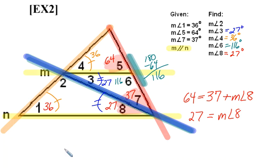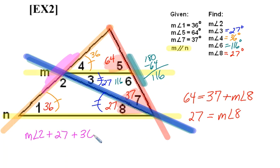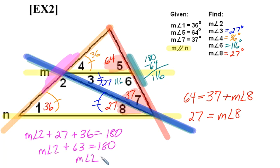Be careful: alternate interior angles are only congruent when they are formed by parallel lines. At this point, angles 2, 3, and 4 glued together form a line. So to determine the measure of angle 2, we say the measure of angle 2 plus 27 plus 36 equals 180 degrees. Hence, the measure of angle 2 plus 63 equals 180, which means angle 2 equals 180 minus 63, or 117 degrees.